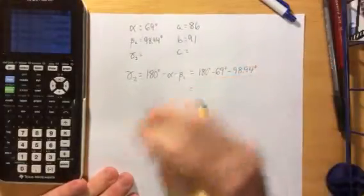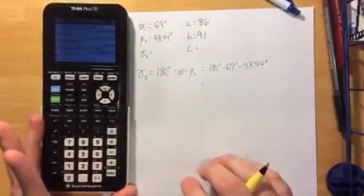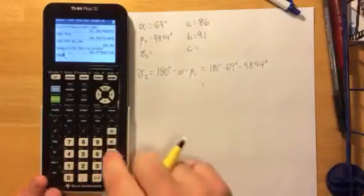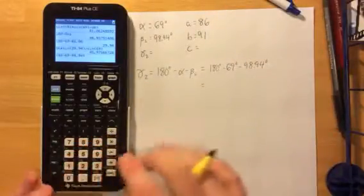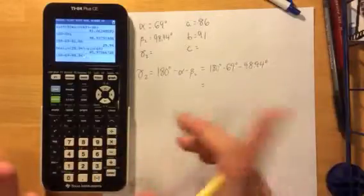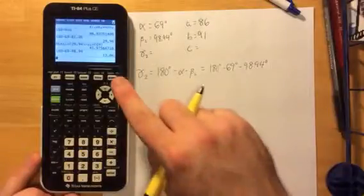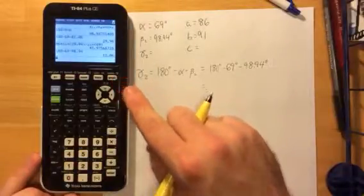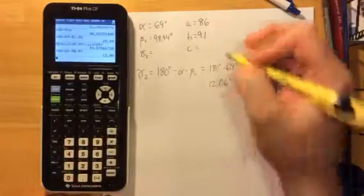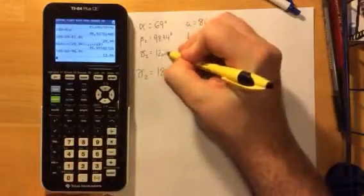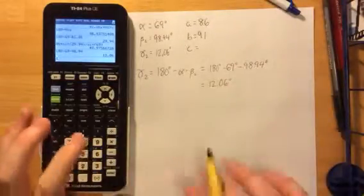This is the step of the process that is not 100% guaranteed. You could potentially wind up with gamma being a negative angle. In a case that gamma is negative, you would have no possible triangle, and you would be done with the problem. You got your one guaranteed triangle from the other case. However, when we plug this into the calculator, we see that gamma is equal to 12.06 degrees, meaning that there is another triangle possible, which means that our ambiguous case is giving us two possible triangles.